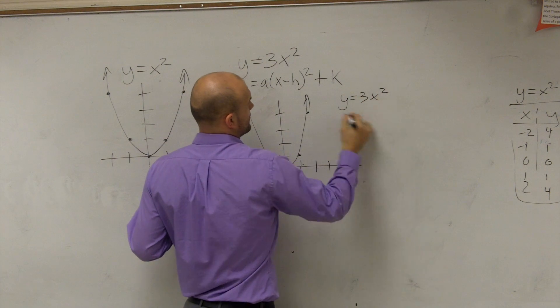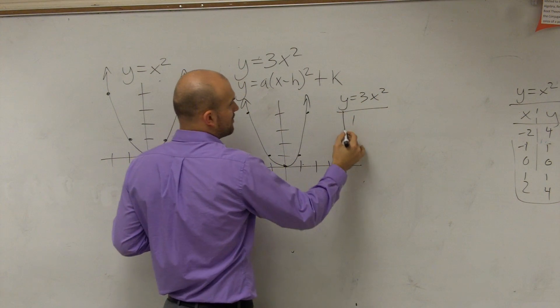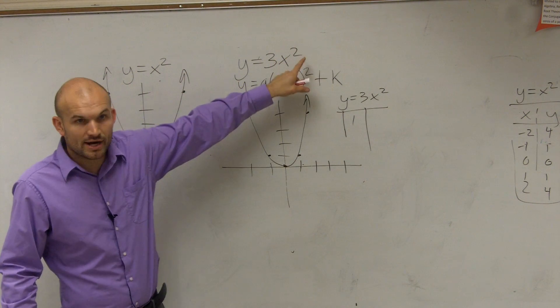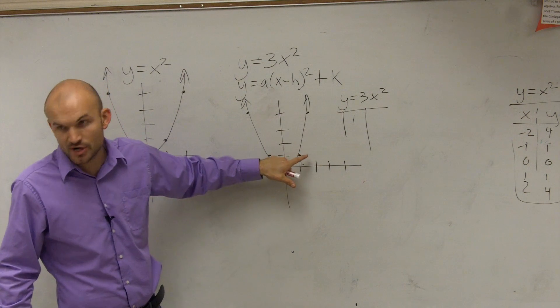y equals 3x squared. So let's do positive 1. If you put a positive 1 into this equation, 1 squared gives you what? 1. And that's how you graph the parent graph.